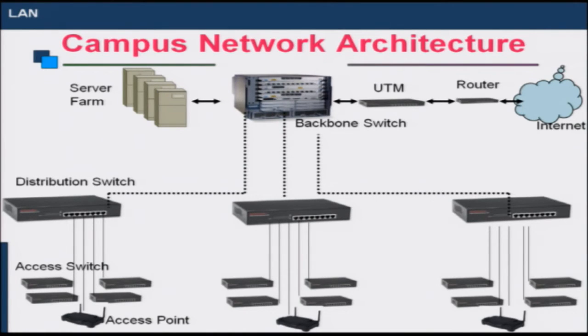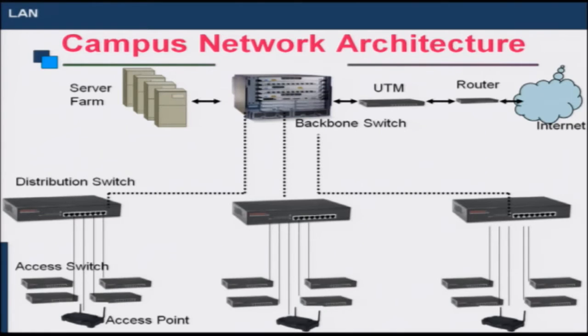So we have an inverted tree topology in which the backbone switch, the distribution switch, and the access switches get interconnected to each other and provide connectivity to end computers. If I want to have a wireless network also, I can connect wireless access points to different access switches and provide wireless connectivity in the region where an access point has been provisioned. This is a simple architecture used to provide connectivity in a campus environment.